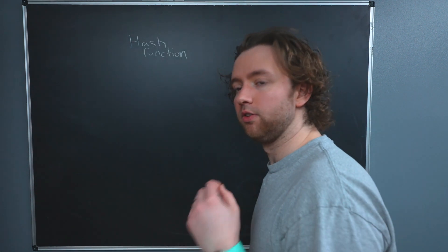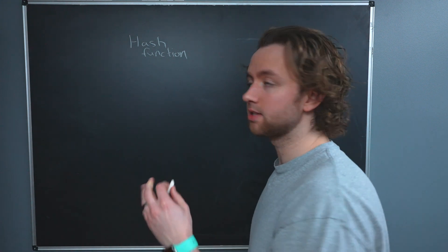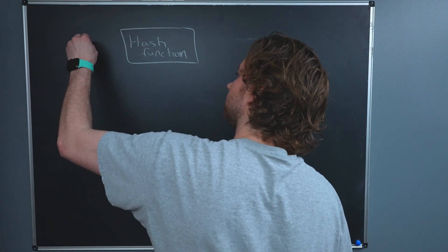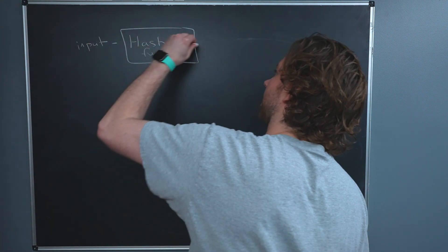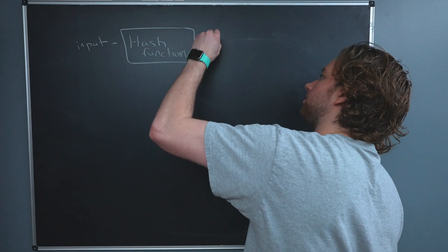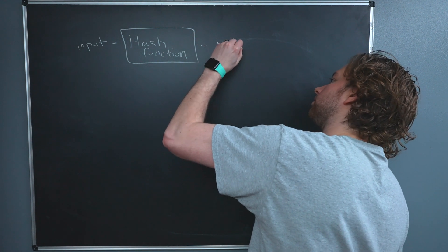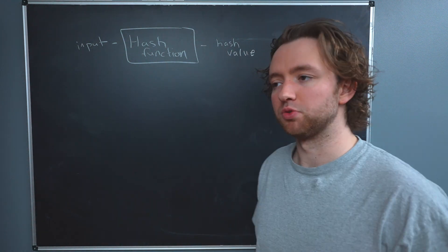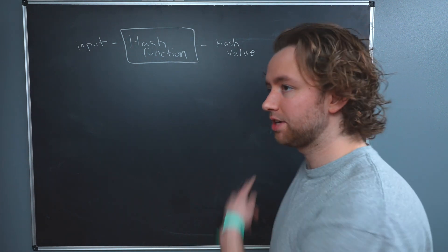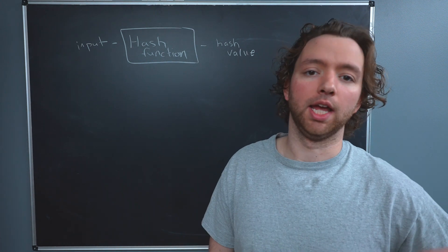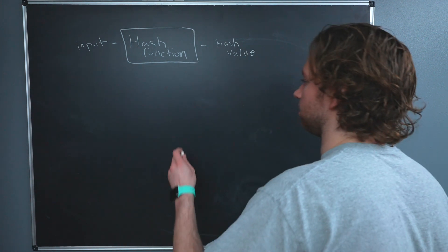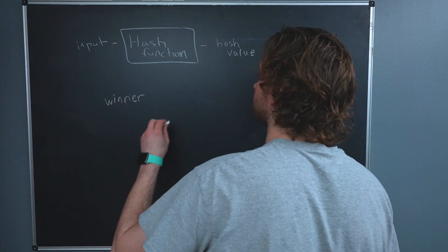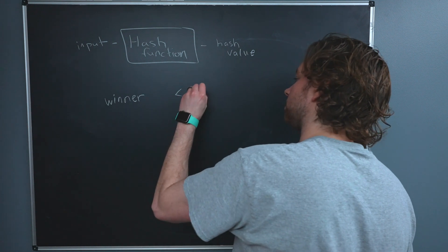So we have a hash function such as SHA256 and this takes an input and gives us an output known as a hash value. And the way Bitcoin miners win is by calculating a hash value below a certain target. So winner is below target.